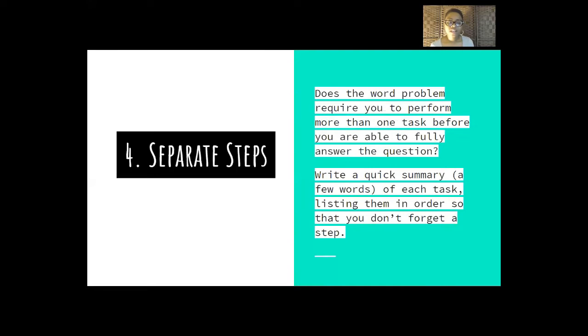Number four in your scavenger hunt is separate steps. Sometimes we overlook this. We forget that there's more than one task that you have to complete in order to answer the question. Ask yourself, does the word problem require you to perform more than one task before you are able to fully answer the question? Then you need to write a quick summary, just a few words, of each task. What is it that you need to do? Listing them in order so that you don't forget a step. If it says, Allison's bank account decreased by $5. That is subtraction, right? You can just say, decrease by $5, subtraction. And that can be your little summary.